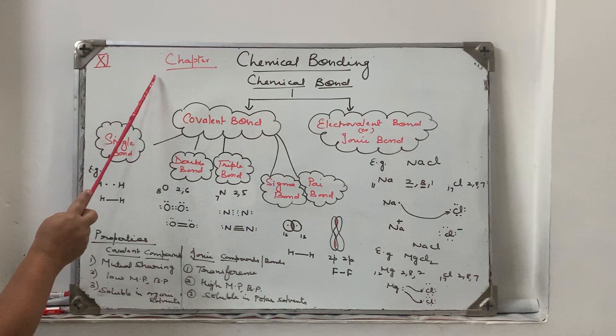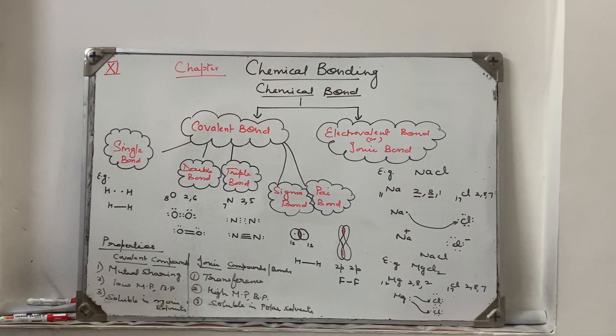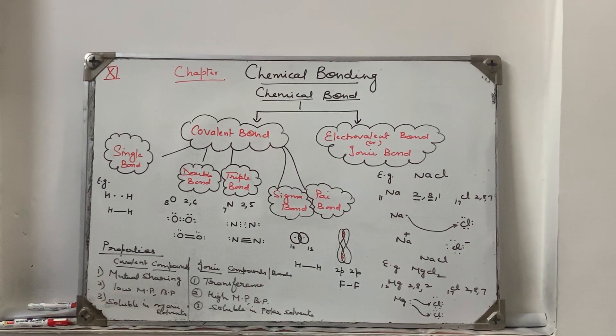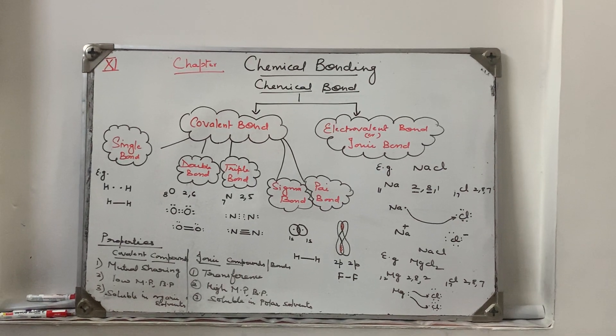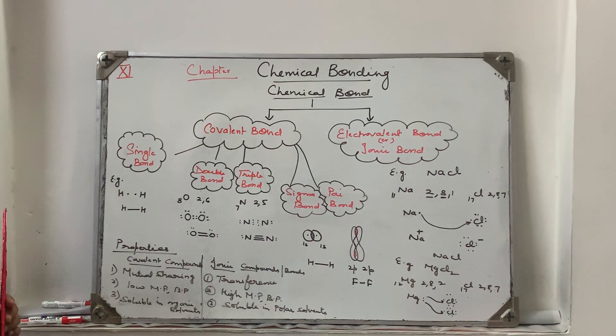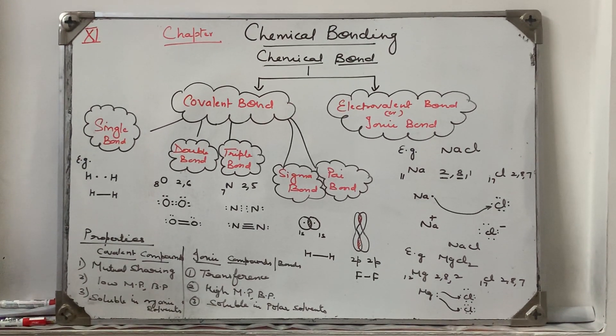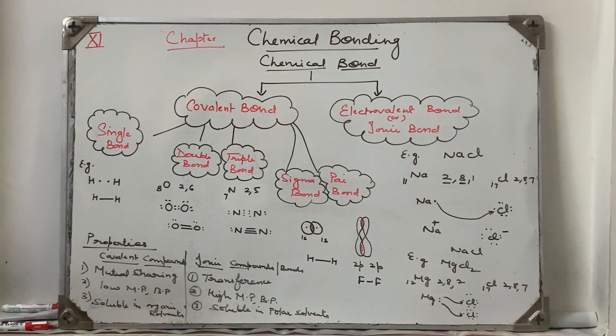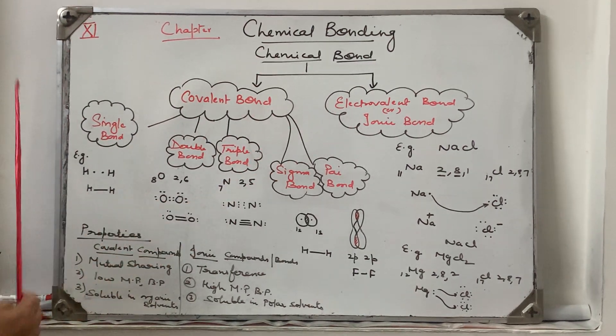Plus one students, this is the new chapter of your syllabus: chemical bonding. First of all, you know what is a chemical bond? You have already learned in class 9 it is a source of attraction between the two atoms which holds the two atoms together. Why do atoms combine? In order to attain stability or in order to complete their octet or duplet.